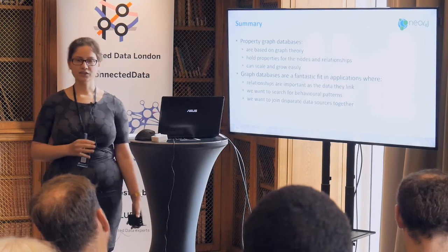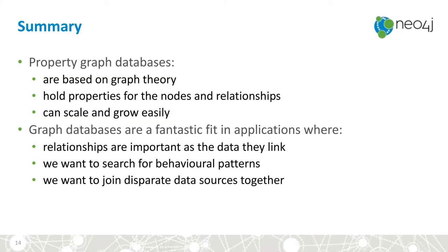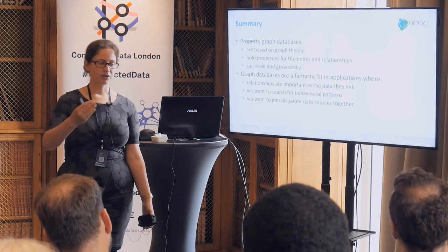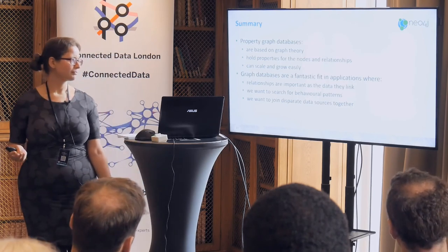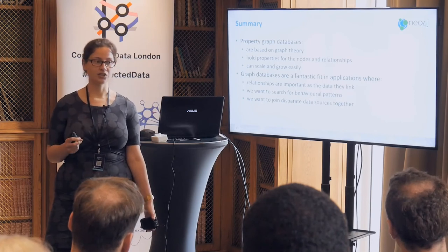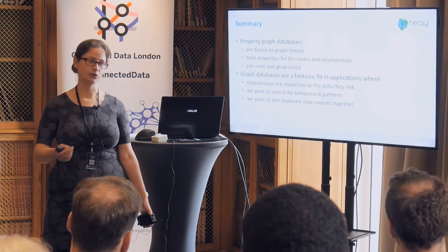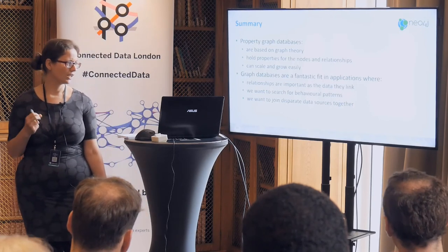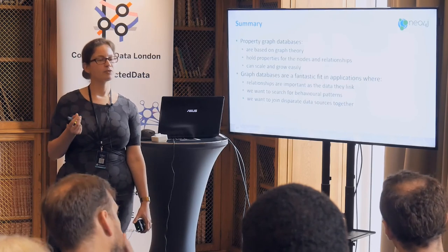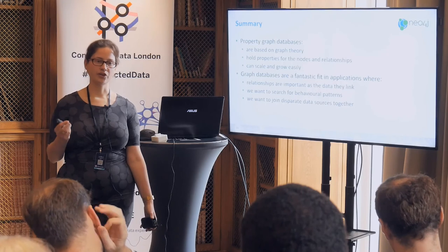In summary: property graph databases are based on graph theory — we showed Königsberg as the inspiration. A property graph database holds properties on both nodes and relationships, and we can add labels — making it a label property graph database. We can start small and slowly grow the model because the schema is flexible. Graph databases are absolutely fantastic where we want the relationship to be treated as important as the information it links to — relationships are treated as a first-class citizen — which is powerful when looking at how people or products are connected.